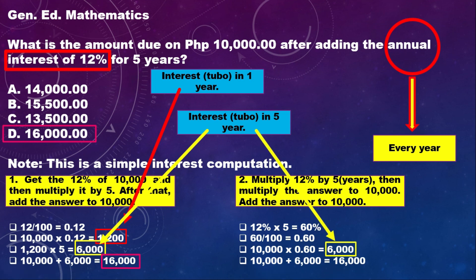After that, add it to 10,000, and that is 16,000. That's the final answer for this simple interest computation question in mathematics.